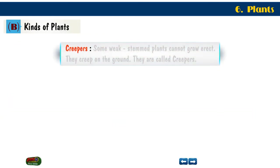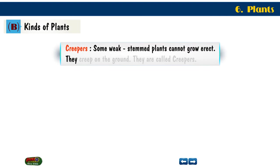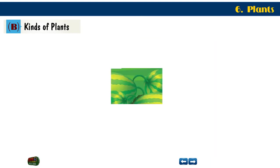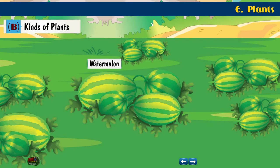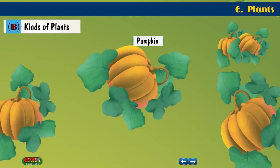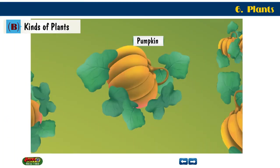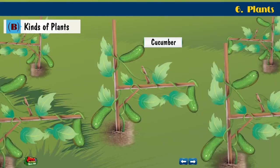Creepers. Some weak-stemmed plants cannot grow erect — they creep on the ground. They are called creepers. Examples include watermelon, pumpkin, and cucumber.